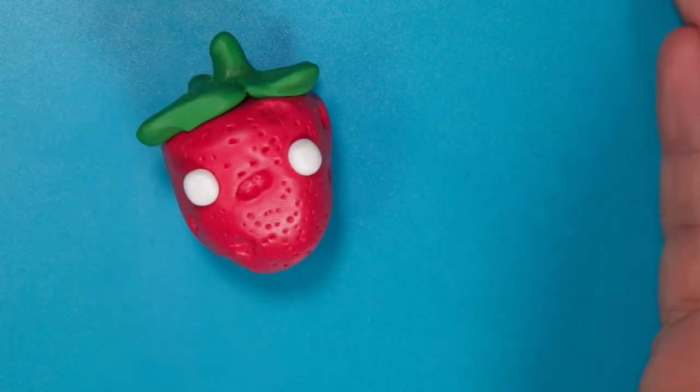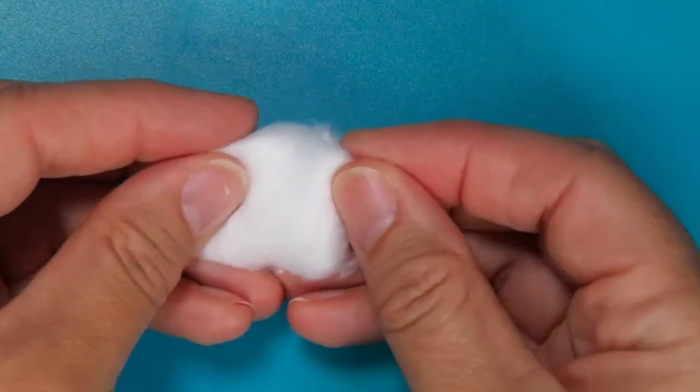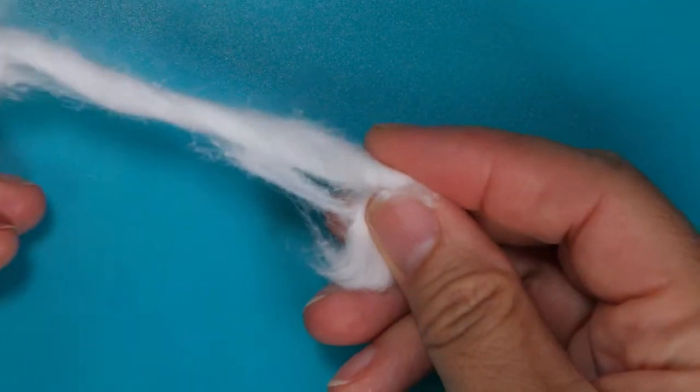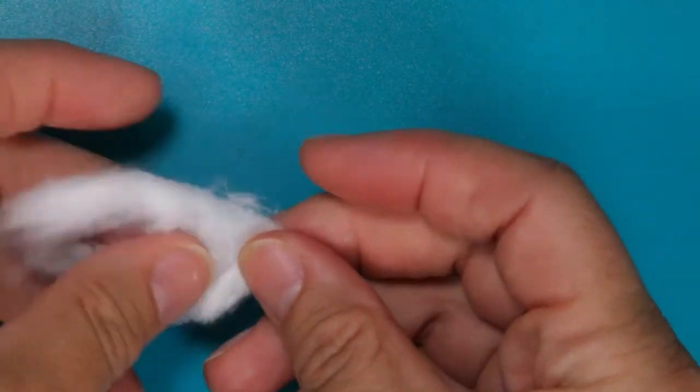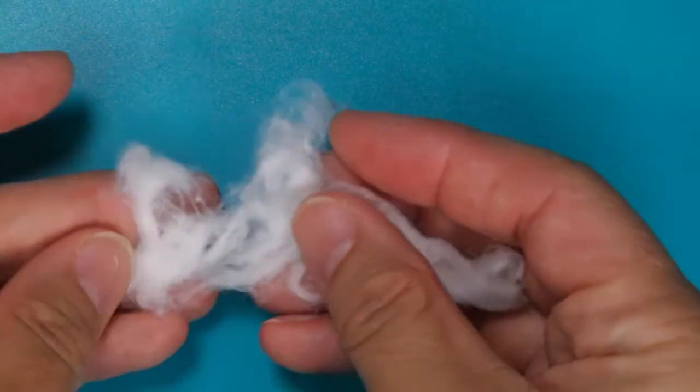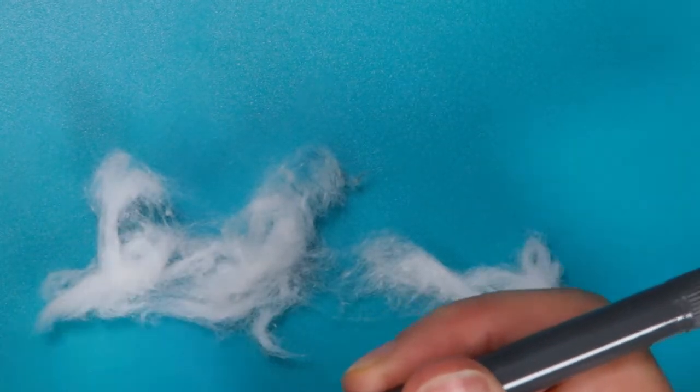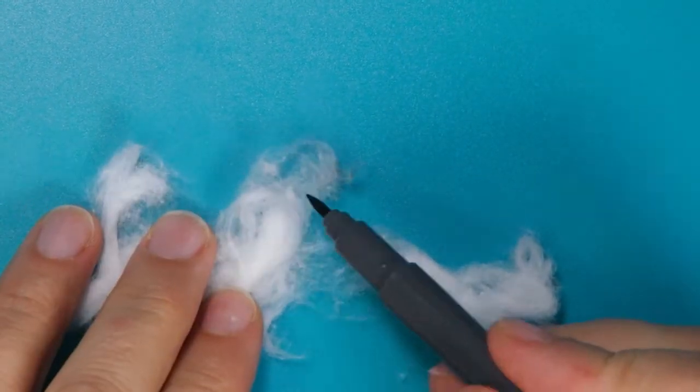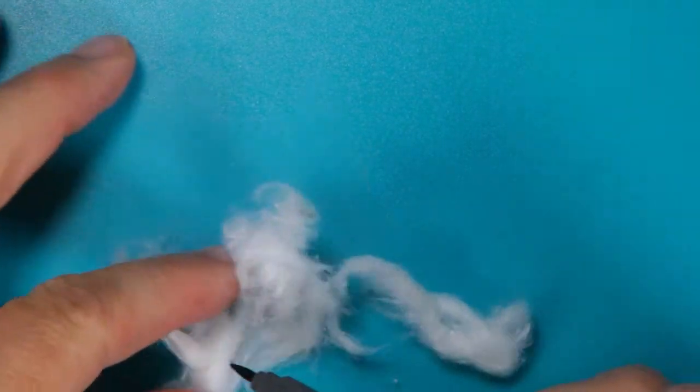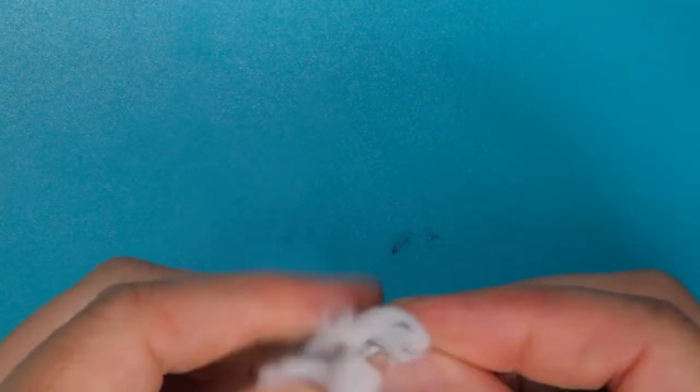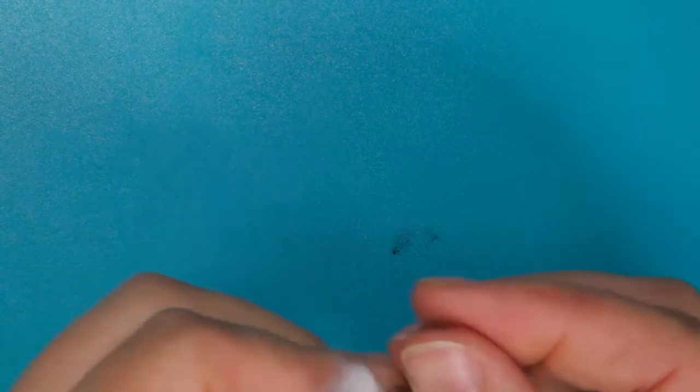While your clay is baking or air drying, pull out your cotton ball. Take that cotton ball and stretch it out a little bit so we get some thin little bits of cotton. Now pull out your gray marker or paint and you'll want to apply that color to the cotton ball. We kind of want to make that mold look a little scarier than just white puffs.